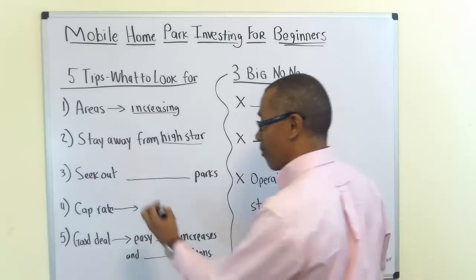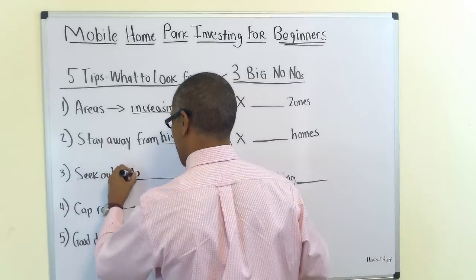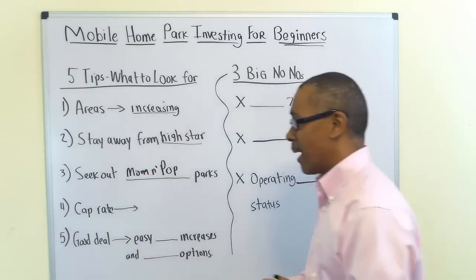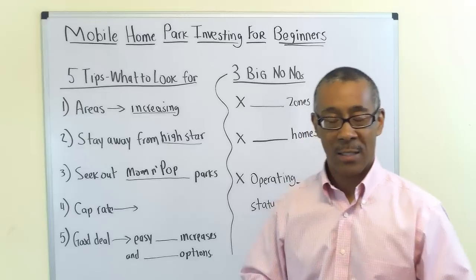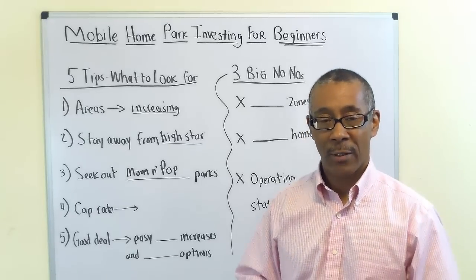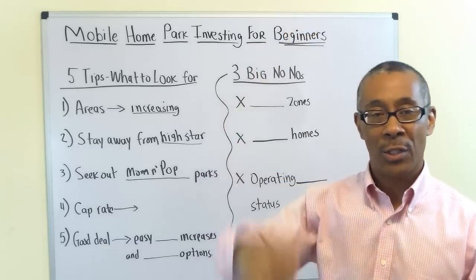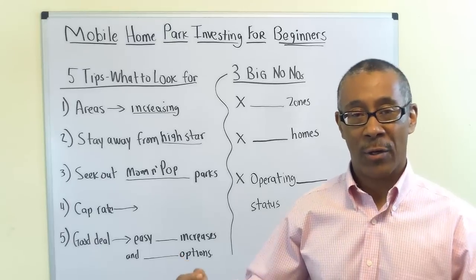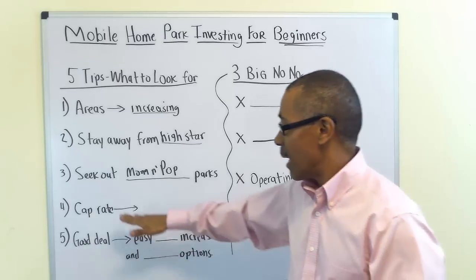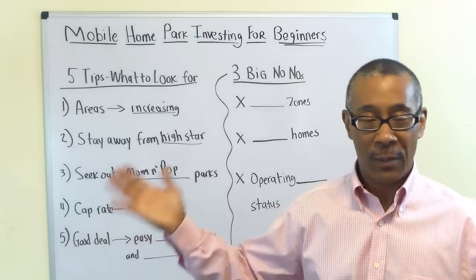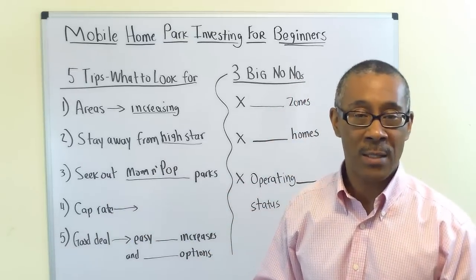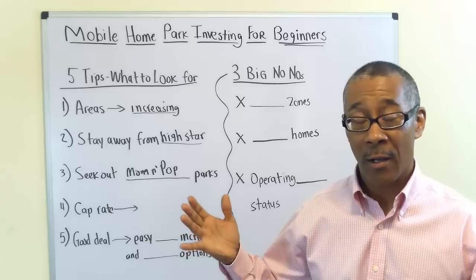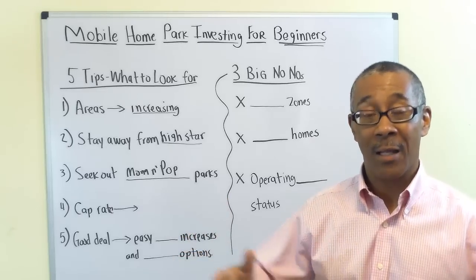Tip three: seek out the mom-and-pop parks — small individual owners, not large institutions. You don't want to buy from large institutions because it's going to be too expensive and your cash flow and returns will be too low. Out of the 50,000 parks in the U.S., at least a third are mom-and-pop parks, so you have a great number to choose from.